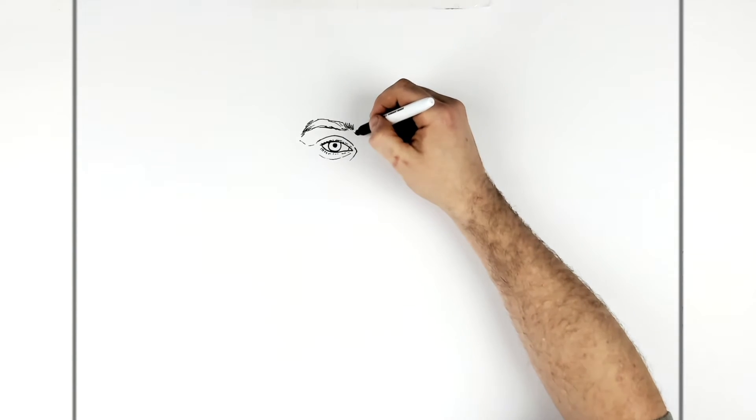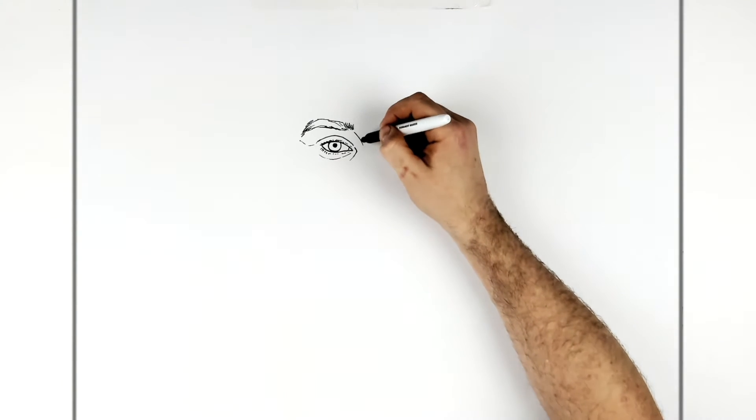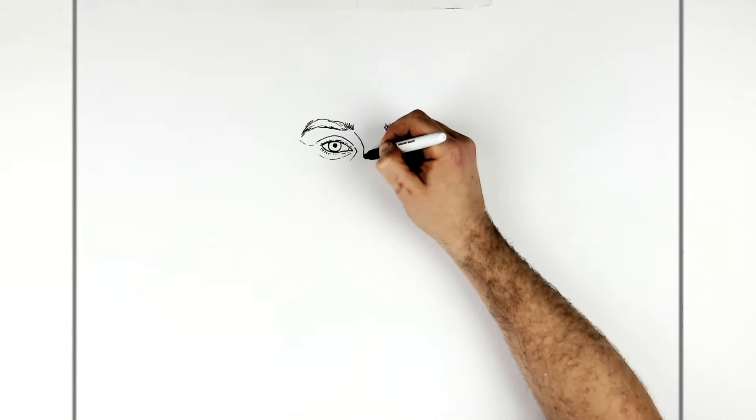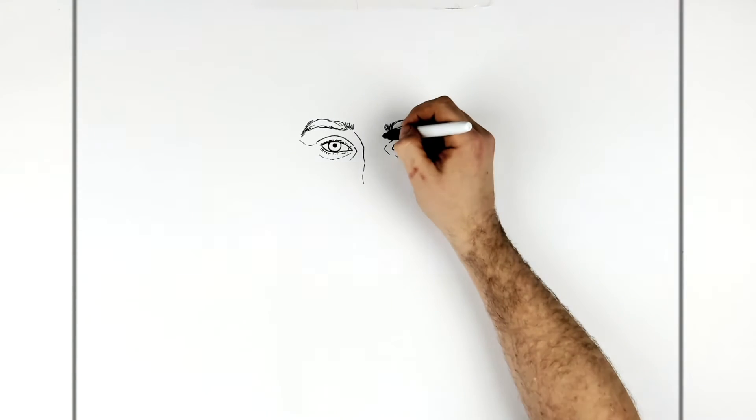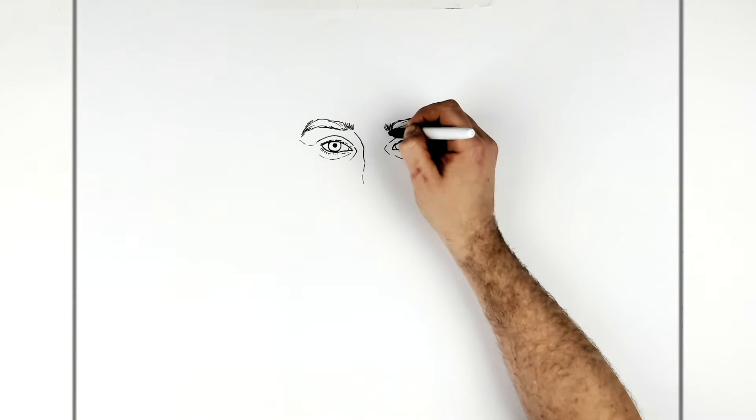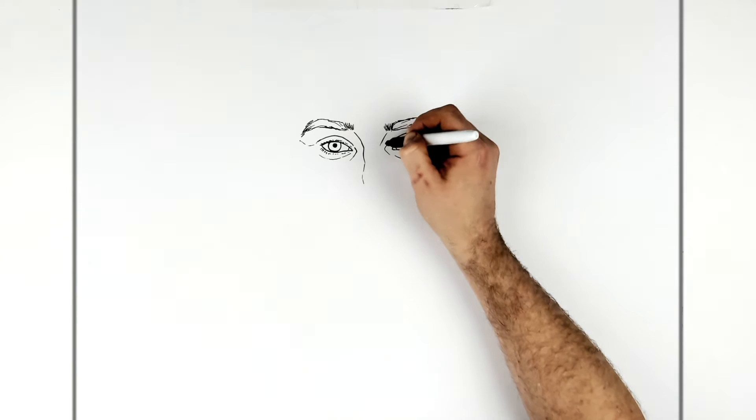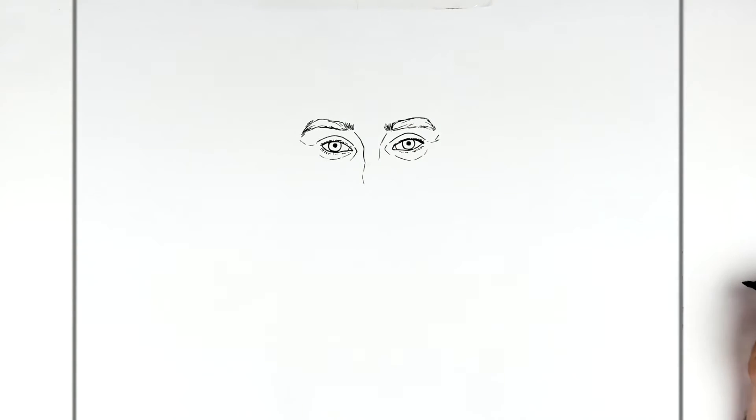So his nose. We can just see a line just for the bridge of his nose, coming down here. Bumps around. Light sort of line going down there. Maybe something else on this side as well, just something light coming down there.